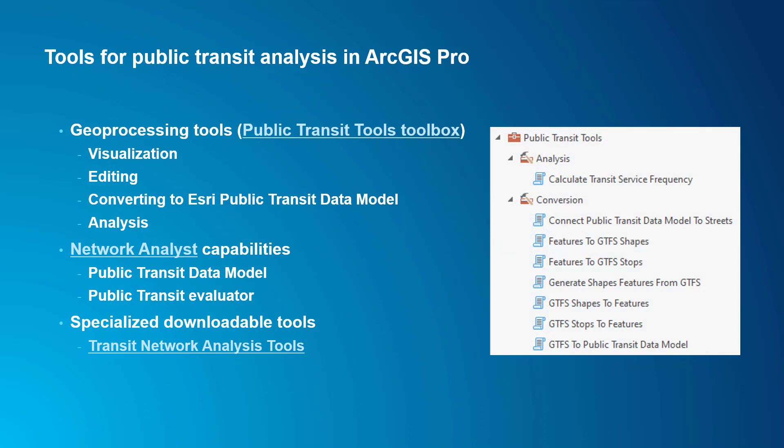Let me give you a quick overview of the tools we have in ArcGIS Pro for doing analysis with public transit data. There are a couple of different parts, and I think it helps to understand how they all fit together. First, we have a set of geoprocessing tools for working with public transit data. These are located in the Public Transit Tools Geoprocessing Toolbox, and they can be used to visualize or edit your GTFS data, as well as convert GTFS into the public transit data model and calculate the frequency of public transit service. Just a quick note: if you're using a version of ArcGIS Pro prior to 2.9, these tools were located in the Conversion Tools Toolbox.